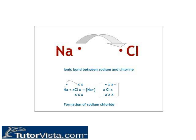Ionic bonds form when metals and non-metals chemically react. For example, in the reaction between sodium and chlorine, each chlorine atom takes one electron from a sodium atom. Therefore, each sodium atom becomes a cation, Na+, and each chlorine atom becomes an anion, Cl-. Due to their opposite charges, they attract each other to form an ionic network or lattice. The formula ratio of positive to negative ions in the network or lattice is NaCl.